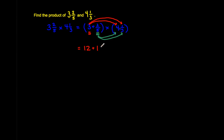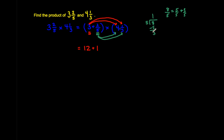Eight-fifths can be written as a mixed number, because it is the sum of a whole number and a fraction. Five-fifths make one whole, and there are three more fifths left, so this is one and three-fifths. Or, using division: five goes into eight once, one times five is five, eight minus five is three — giving the same answer, one and three-fifths.